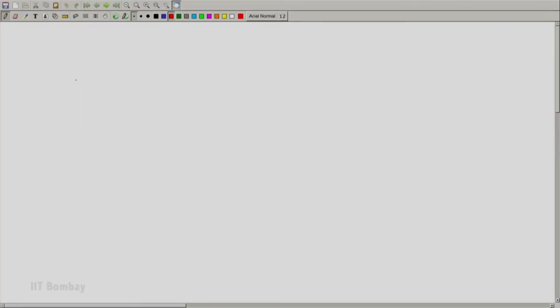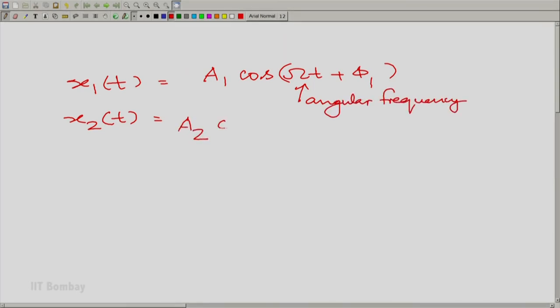So we have two sine waves. Let us call them x1(t) and x2(t). Of course, we are talking about continuous time here. x1(t) is A1 cos(Ωt + φ1). I am going to use capital omega t plus phi 1. The angular frequency of the sine wave is the same in x1 and x2. So here you have A2 cos(φ2 + Ωt).